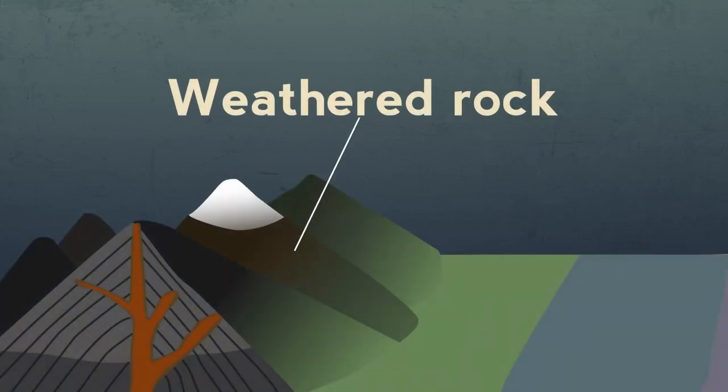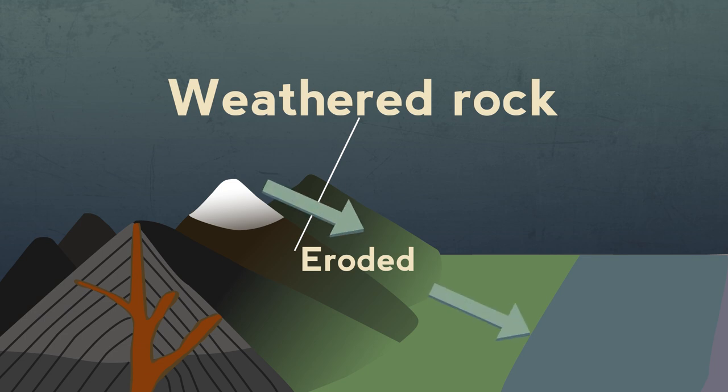Weathered rock forms the soil but it is also eroded, that means transported either by wind or more usually by water to the sea.